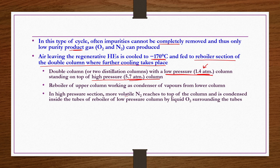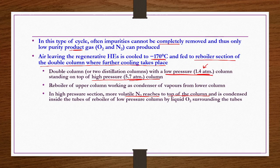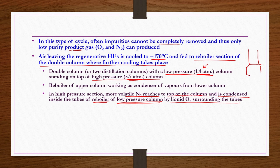In the high pressure section, N2 is more volatile than O2, so it reaches the top of the column easily and is condensed inside the tubes of the reboiler of the low pressure column by liquid O2 surrounding the tubes. The low pressure column is mounted on top, the high pressure column is below, with a heat exchanger between them. The columns are provided with trays — the number of stages required for distillation is calculated from mass transfer principles.